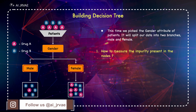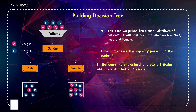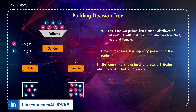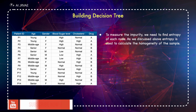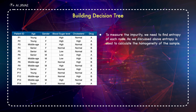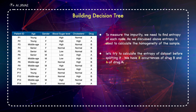Now I have two questions for you. First, how do we measure the impurity present in the nodes? Second, between the cholesterol and gender attributes, which one is a better choice? Pause the video and think about it. To measure the impurity, we need to find the entropy of each node. As we discussed, entropy is used to calculate the homogeneity of the sample. You can easily calculate the entropy of a node using the frequency table of the attribute through the entropy formula, where P is the proportion or ratio of a category such as drug A or B.